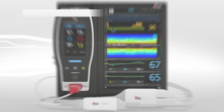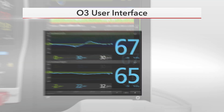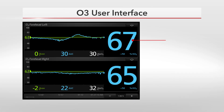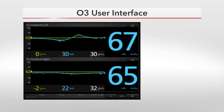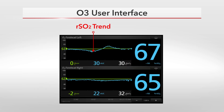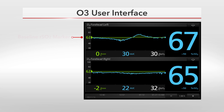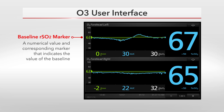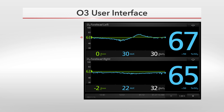The O3 window on Root displays the RSO2 value, or the tissue oxygen saturation. It also shows the RSO2 trend, the baseline RSO2 marker — a numerical value and corresponding marker that indicates the value of the user's set baseline.